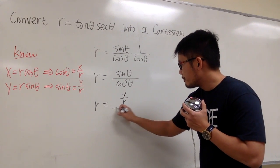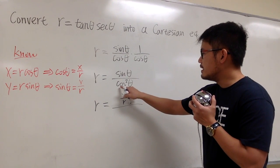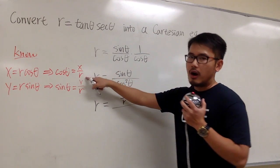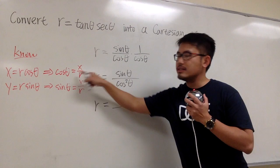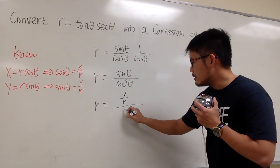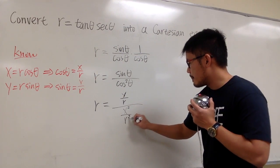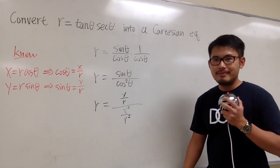And then on the bottom, this is cosine squared theta. We know cosine theta is x over r. So we just have to square this, square that. So that means I will have x squared over r squared. So this is what we have. And now what?